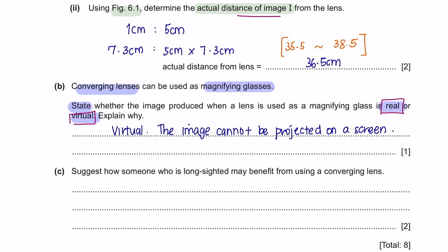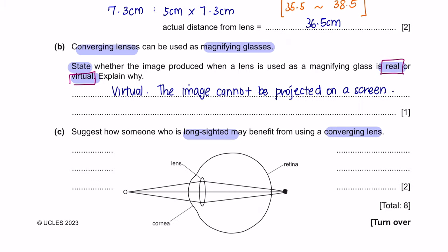Question C: Suggest how someone who is long-sighted may benefit from using a converging lens. A person with long-sightedness has their image fall behind the retina, meaning they cannot see near objects clearly. To see objects clearly, the image must fall on the retina. We can place a convex lens so that the rays are converged and the image is formed on the retina.